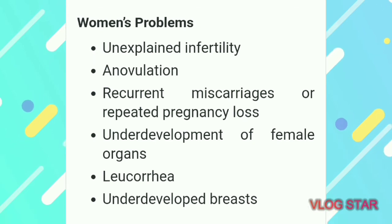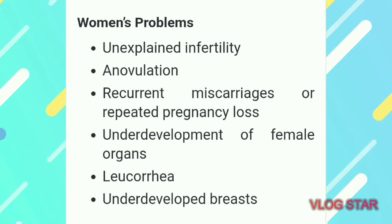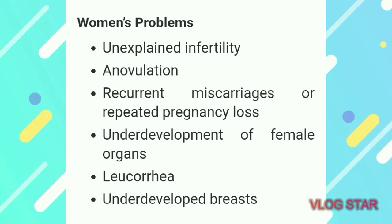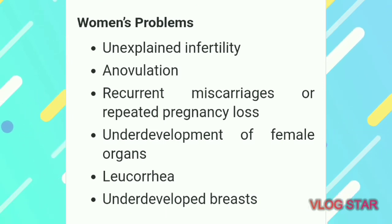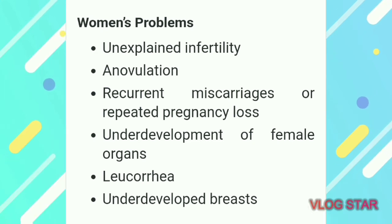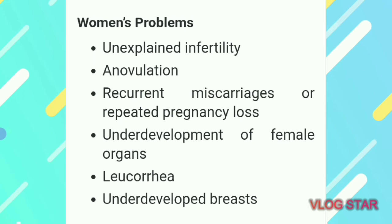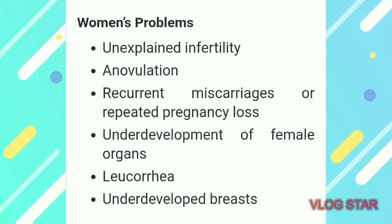Next, we are going to talk about urinary tract problems, such as anovulation and many such disorders. These include improper urination and a lot of dysuria. In all such conditions, we are going to use Trivang Basan, whose health properties are beneficial.